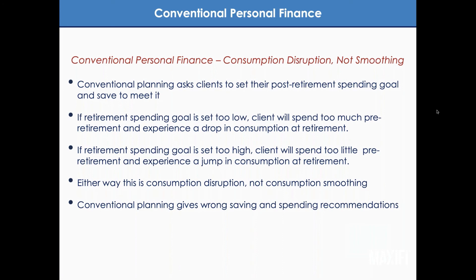Conventional planning is therefore giving the wrong saving and spending recommendations, because right off the bat it asks the client to figure out something extremely complicated. If the client really wants a smooth living standard, you're asking them to solve the problem themselves — figure out how much to spend in retirement and, effectively, how much to spend before retirement — getting those two amounts to be equal while taking into account lots of factors. That's a very complicated problem that can't be solved by a human brain alone; it has to be solved by sophisticated software.